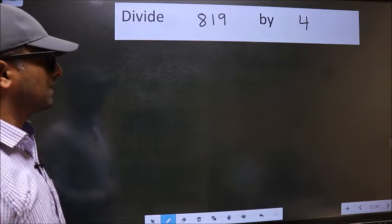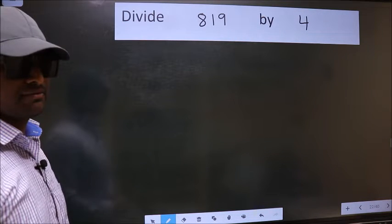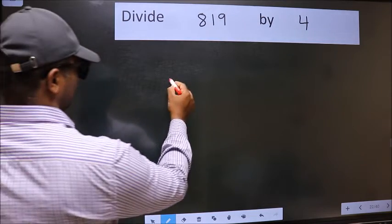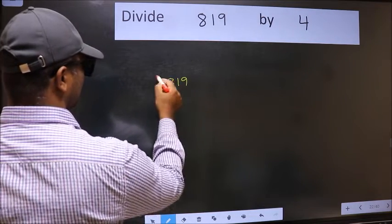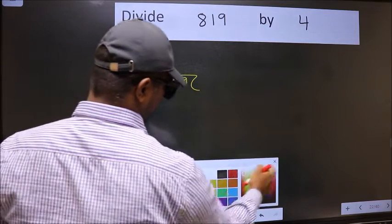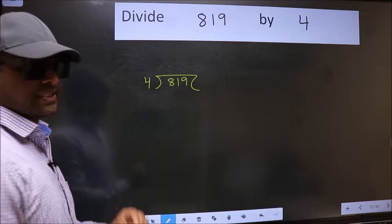Divide 819 by 4. To do this division, we should frame it in this way. 819 here and 4 here. This is your step 1.